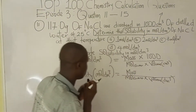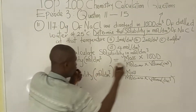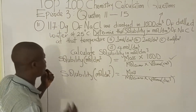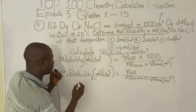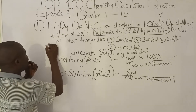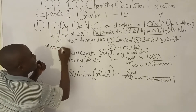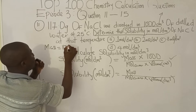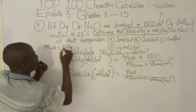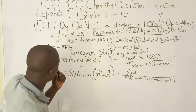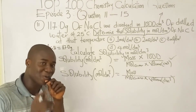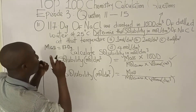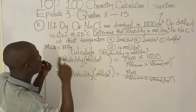Now let's apply the formula to the question. The volume is in cm³, so we add 1000. Let's bring out our parameters. The mass is 117.0 grams. Now we need the molar mass of the compound, which is NaCl.